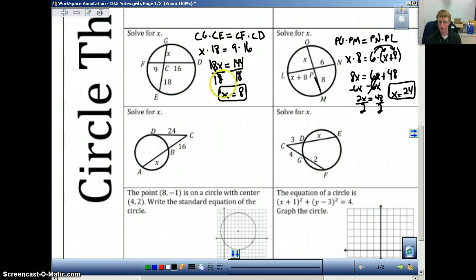So you should have gotten X equals 8. Hopefully, you got that. If not, pay attention here. We have CG times CE. So, CG times CE will equal CF times CD. And then all I did was plug in what I know. CG is X, CE is 18, CF is 9, and CD is 16. And then I solved the equation. 18 times X is 18X. 9 times 16 is 144. Divide both sides by 18, and you get X equals 8.